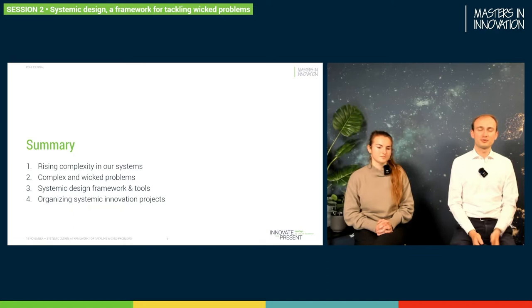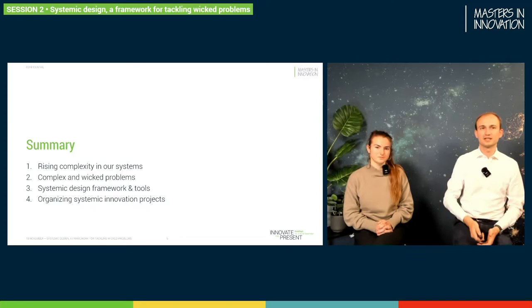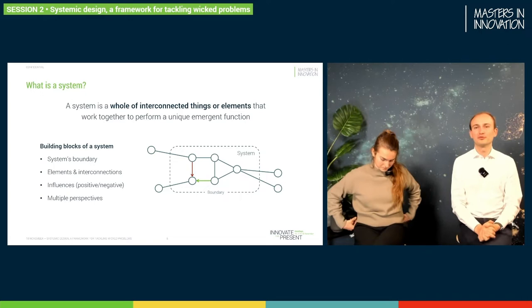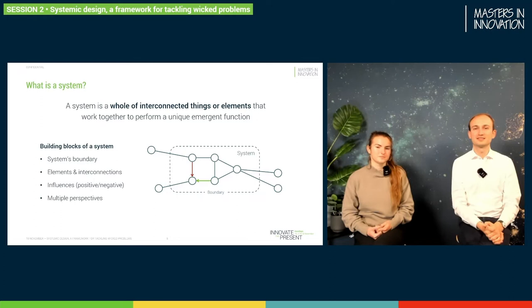First, I want to start with a short definition of what a system is. We are going to see some examples in a bit. But in general, we consider a system as a whole of interconnected things and elements. And those elements all work together to perform a unique emergent function for that system. In short, we can summarize a system as a number of nodes and links that each influence one another within the system's boundary.